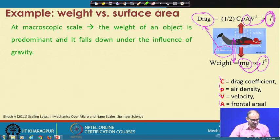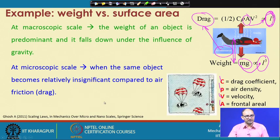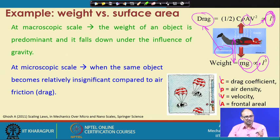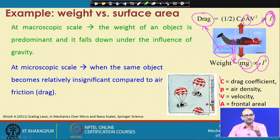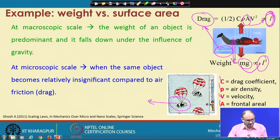What will happen in this case? At the microscopic scale, weight becomes little and insignificant compared to air resistance. Consider the example of an ant: if you drop an ant from one floor, or even 100 meters, nothing is going to happen. When it reaches the bottom it will walk away very freely. But the same thing will not happen to a human falling from a large height. The difference is the weight — the weight of an ant is very very small compared to its size.